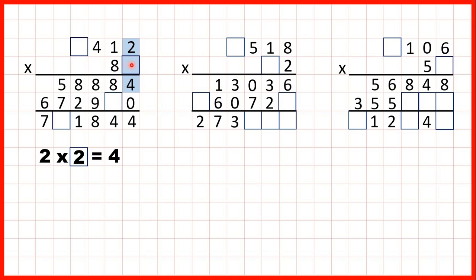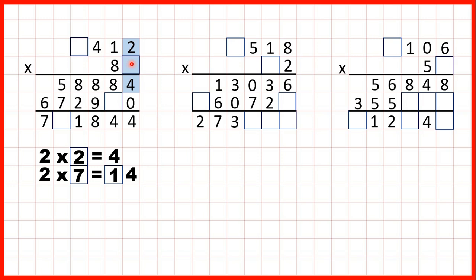But remember, with long multiplication only the ones digit is written in the answer line, and if there's a tens digit that's written above. So we could have multiplied 2 by something to get a ones digit of 4 — we could have done 2 times 7 is 14 and then carried the 1. So is this missing box 2 or 7? Well, what we can do is just try it out and then see if it works for the rest of the question.